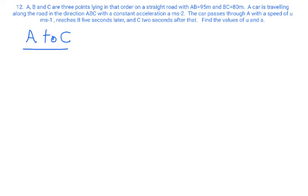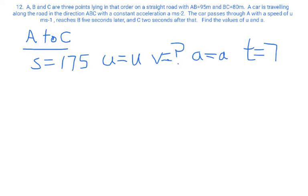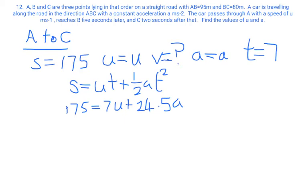For A to C, what have we got? We know the distance travelled, S, its displacement, is going to be 175 because it's that total distance. I know that U, the initial velocity at A, is U. The final velocity at C, don't know. Acceleration, A is A, and the time to get to C is seven seconds. Now I want to make sure that we've used A to C and not B because we never knew the velocity at B, so I wouldn't have had an initial velocity for B. So that's why we're going to stick with A to C. So again, we're using S equals UT plus half AT squared. And when we substitute everything in, we get that 175 equals 7U plus 24.5A. We've now got two equations, two unknowns, U and A.